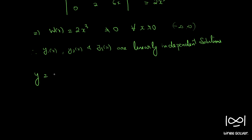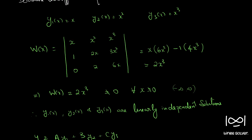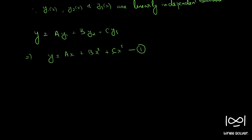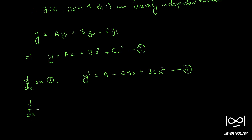The general solution can be written as y = a·y1 + b·y2 + c·y3, so y = ax + bx² + cx³. Let this be equation 1. Differentiating equation 1, we get y' = a + 2bx + 3cx², which is equation 2. Differentiating again, y'' = 2b + 6cx, which is equation 3.